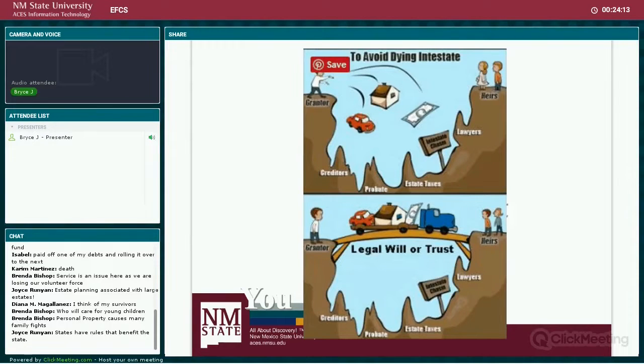A factor often overlooked is that without a will, a person cannot state when the heirs shall receive their inheritance. For example, Nathan, 18, fell heir to a large sum of money and blew it within a year.